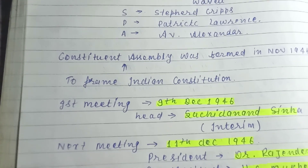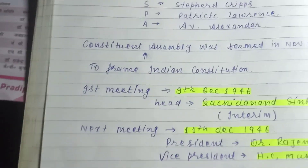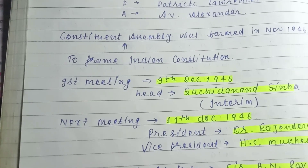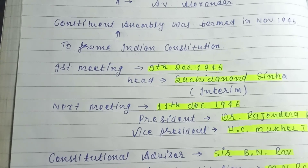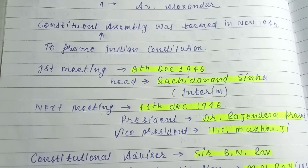The next important meeting was on 11 December 1946, and the President of the Constituent Assembly was Dr. Rajendra Prasad.